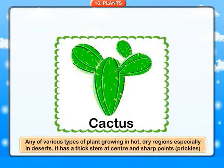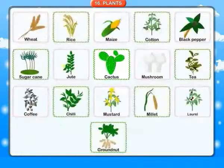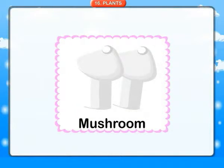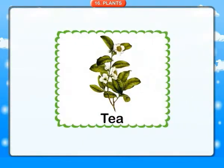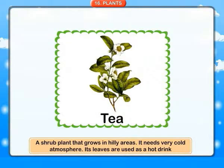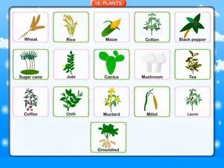Cactus has a thick stem at center and sharp points or prickles. Mushroom: a type of plant which grows very quickly, has a flat or rounded top, and can be eaten as a vegetable. Tea: a shrub plant that grows in hilly areas. It needs a very cold atmosphere. Its leaves are used as a hot drink.